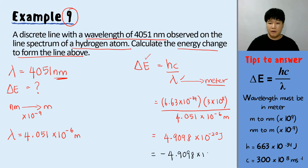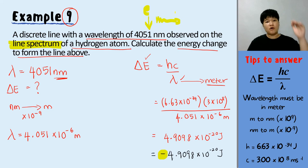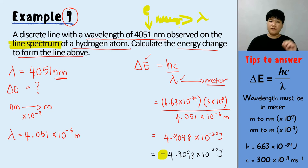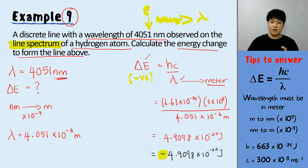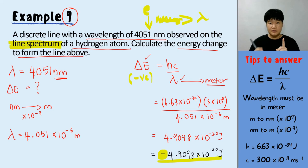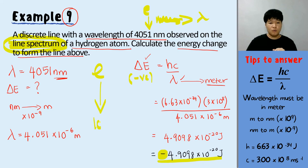The answer is negative because to form a line in the line spectrum, the electron must drop from a higher energy level to a lower energy level, producing a packet of light with a wavelength. When the electron drops, energy is released, so delta E must be negative. The final answer is negative 4.9098 times 10 to the power of negative 20 joules.